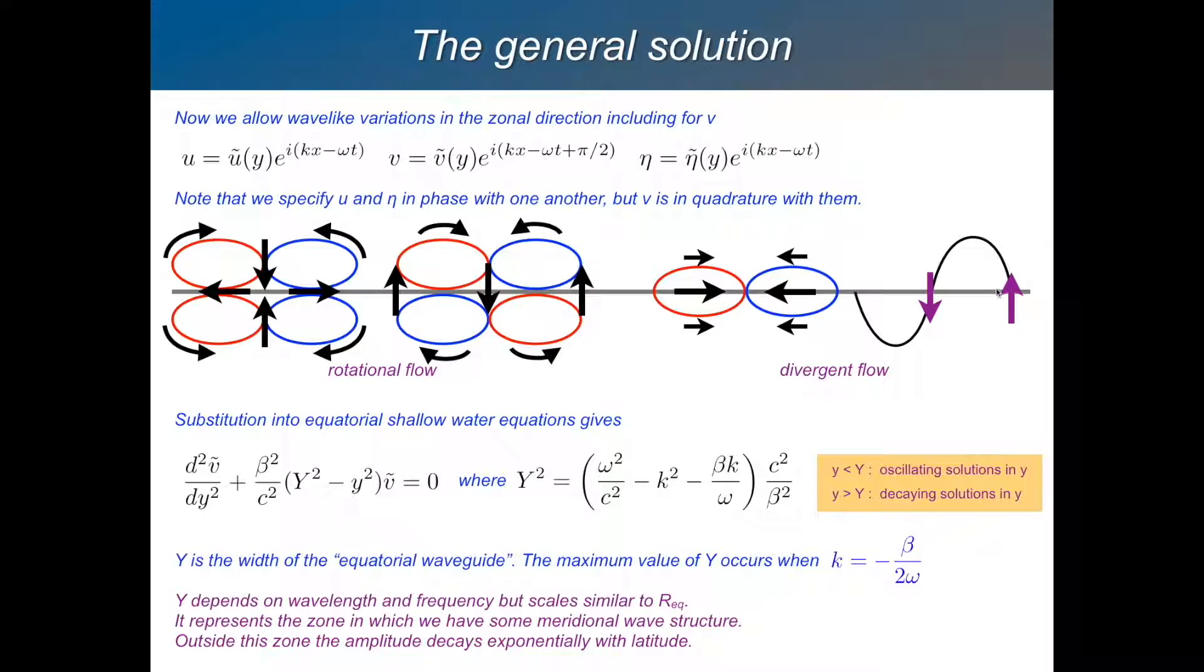If it goes down here and up here, then the next thing that's going to happen is this dip will be further to the east, and this crest will be further to the east. So that's the right configuration to have eastward propagation, which is what an equatorial Kelvin wave does. So there's a description of the solutions we want to try in our equations.